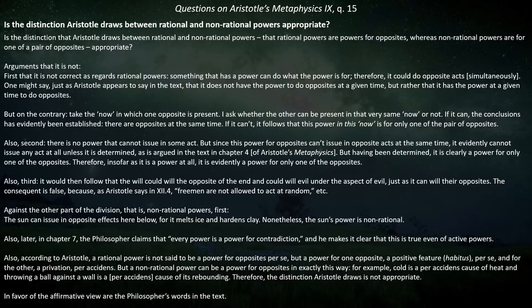Also, later in chapter 7, the philosopher claims that every power is a power for contradiction, even of active powers. Also, according to Aristotle, a rational power is not said to be a power for opposites per se, but a power for one opposite — a positive feature, habitus — per se, and for the other, a privation, per accidens. But a non-rational power can be a power for opposites in exactly this way: cold is a per accidens cause of heat, and throwing a ball against a wall is a per accidens cause of its rebounding. This relies on the distinction between true opposites like left and right, and privations like hot and cold, where cold is the privation of heat.